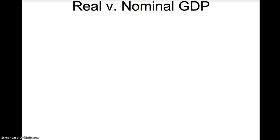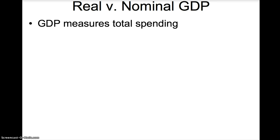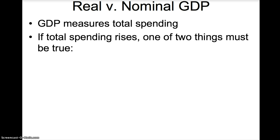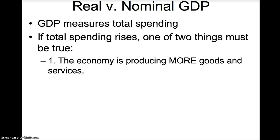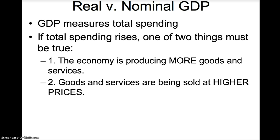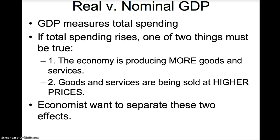There are two different ways to calculate GDP: real GDP and nominal GDP. GDP measures total spending, so if total spending increases, one of two things must be true — the economy is producing more goods and services, or goods and services are being sold at higher prices. We want to separate these two effects, therefore we calculate nominal GDP, which includes both effects, and real GDP, which focuses on the quantity being produced.